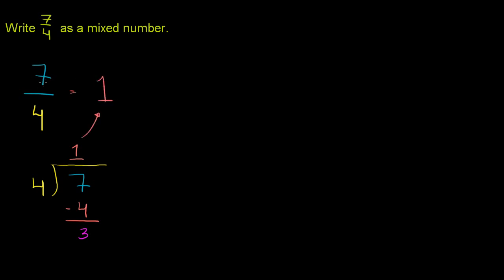And then how much do you have left over? Well, you have 3 left over. And that comes from right over there. That is the remainder when you divide 4 into 7. 3 left over, but it's 3 of your 4. Or 3 fourths left over. So that's the way we just converted it from an improper fraction to a mixed number.